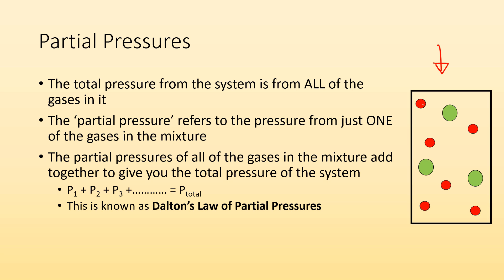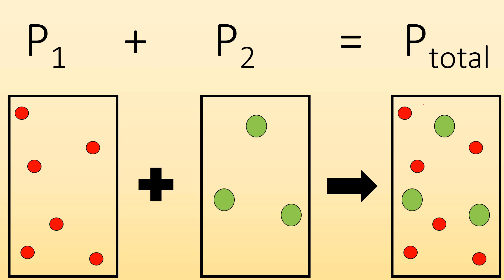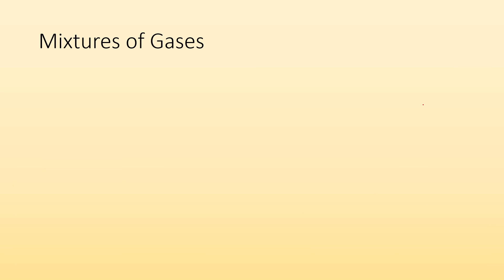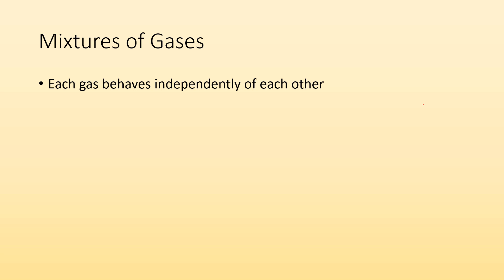This is known as Dalton's law of partial pressures. Basically, you treat each gas as operating independently of any other gases in that system. The pressure from the first gas acts as if the other gases aren't even there. Same with the pressure of the second gas — it's acting as if it's the only one there. So the total pressure is just the sum of all the partial pressures together.